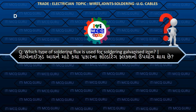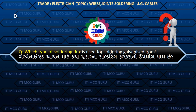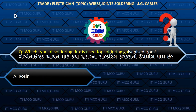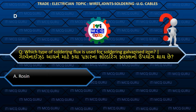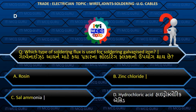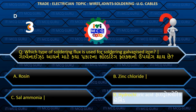Which type of soldering flux is used for soldering galvanized iron? (Galvanized iron maate kyaa prakar na soldering flux no uphyog thai chhe?) Answer D: Hydrochloric acid.